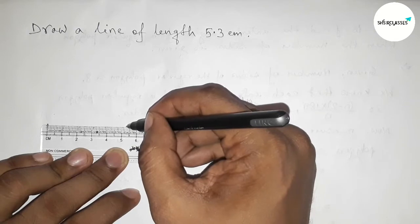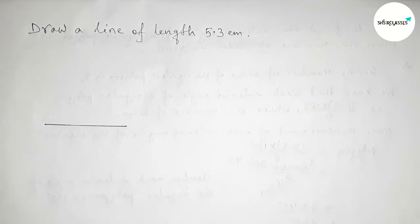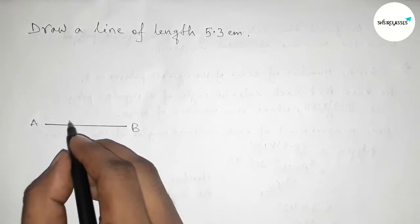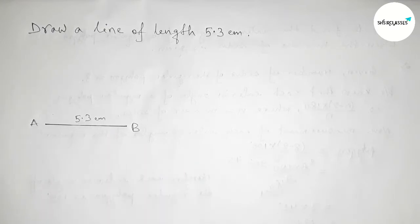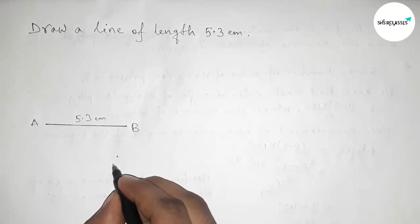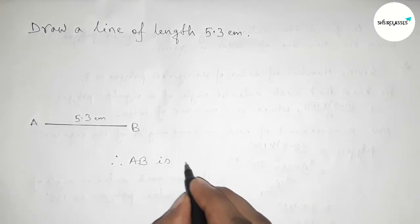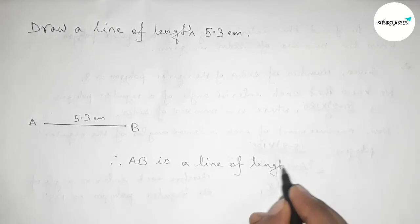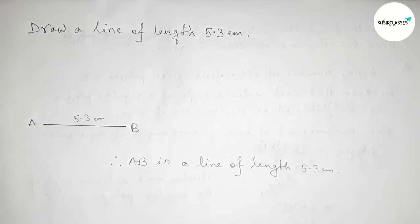Marking this point and joining the line. Taking point A here and point B here. So AB is a line of length 5.3 centimeters. By this way you can draw a line of length 5.3 centimeters. That's all, thanks for watching.